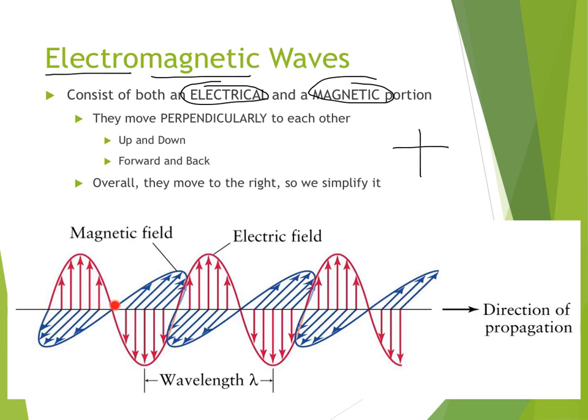Overall though, even though this one is going up and down and this one is going forwards and backwards together, they end up all moving to the right. So the way that we simplify this is just to use one wave that looks very similar to a transverse wave, but it's much easier to simplify it and just draw it as a single wave.